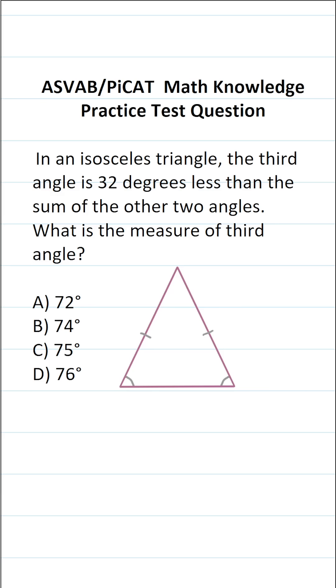In order to answer this one correctly, you have to know some general properties of isosceles triangles as well as triangles. In this case, I want to point out that in isosceles triangles, these two sides are equal, and likewise, these two angles are equal.